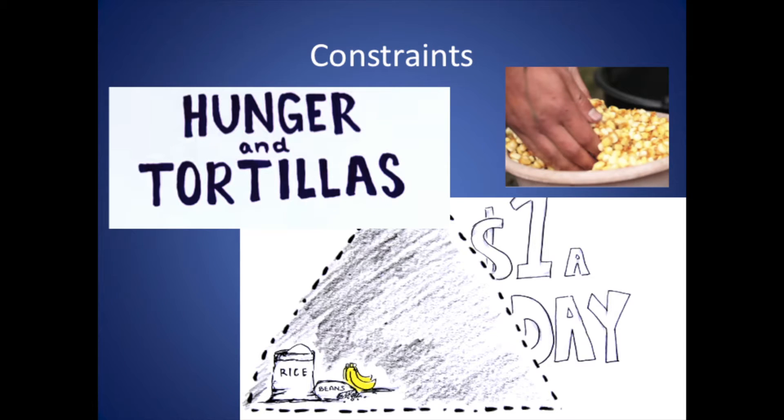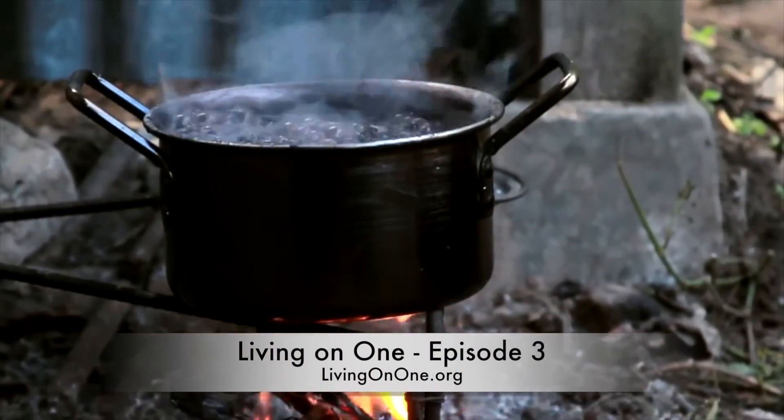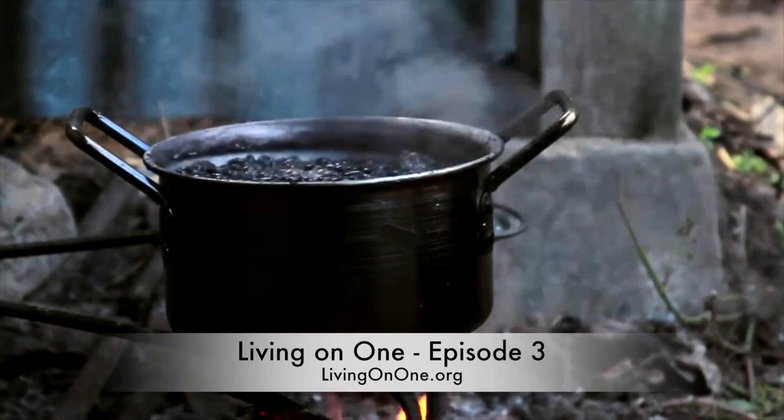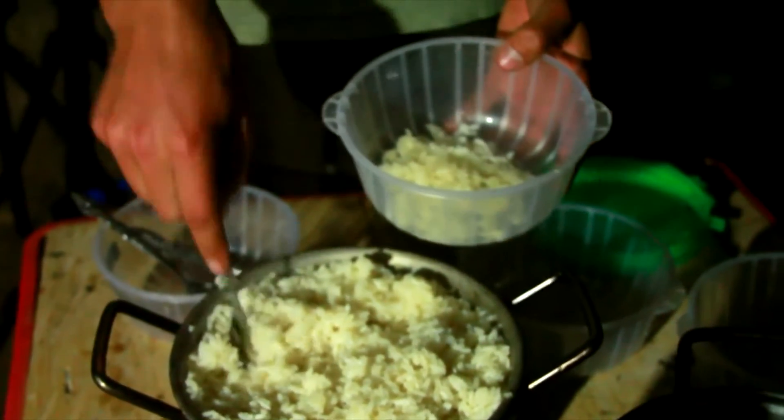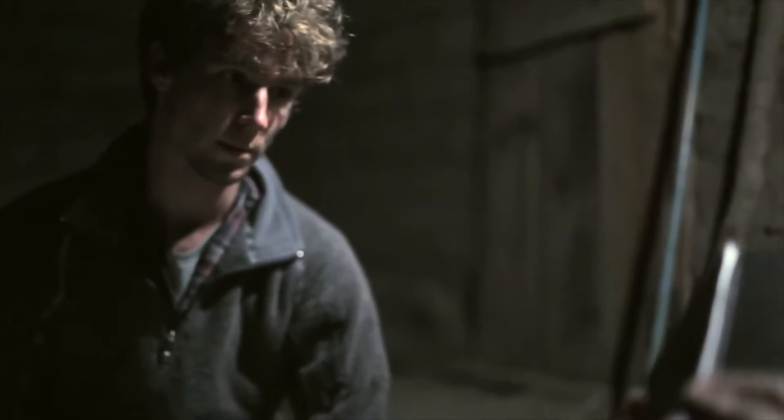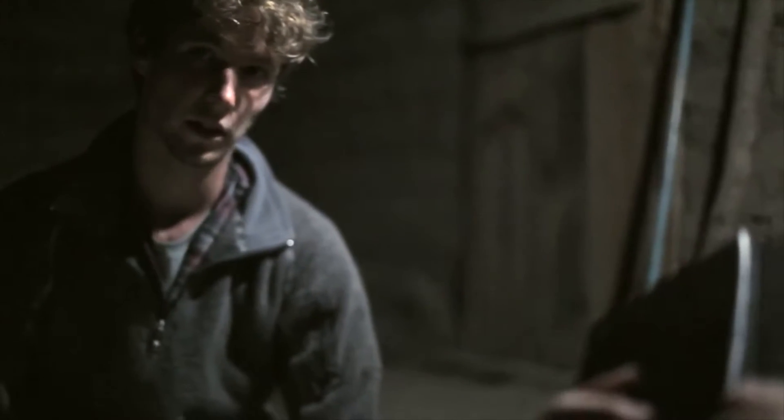The first lesson we looked at was based on the episode 'Hunger and Tortillas,' examining how issues of diet and nutrition are affected by the constraint of only having one dollar per day to spend. In the clip, one and a half pounds of black beans gives sixteen hundred calories, one half pound of yellow rice gives roughly two thousand calories, but thirty-six hundred calories split among four people is not good enough for a daily value.